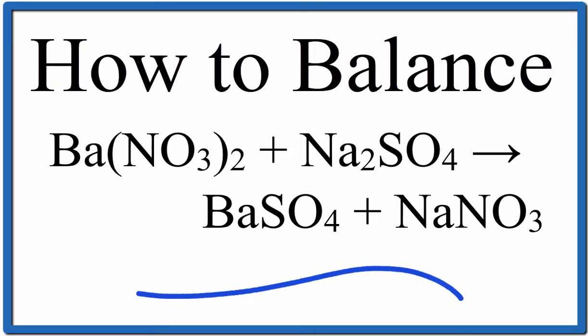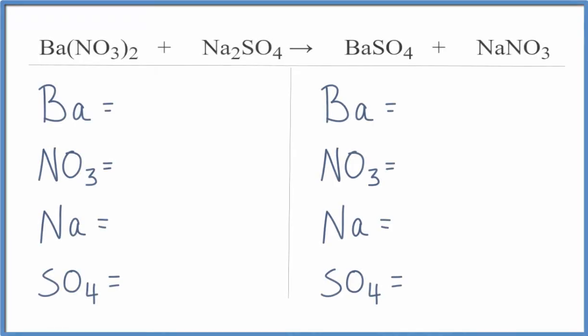To balance this equation, barium nitrate plus sodium sulfate yields barium sulfate plus sodium nitrate, we're going to count the atoms up on each side of the equation.